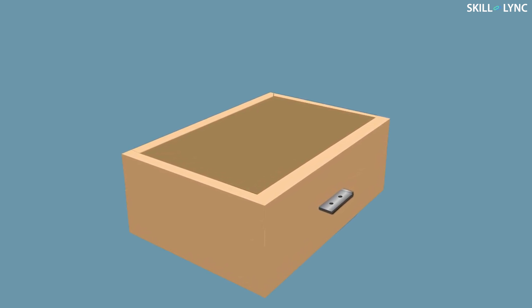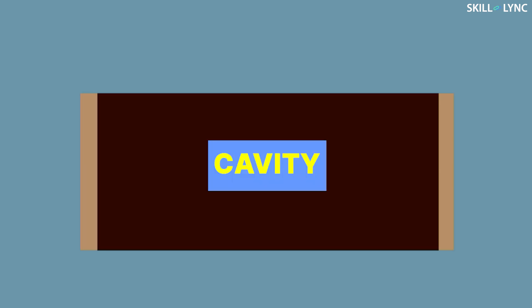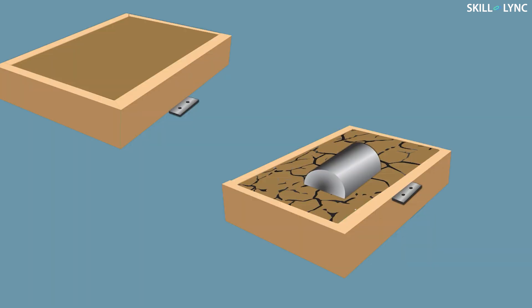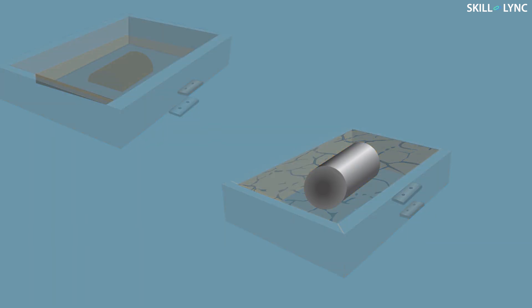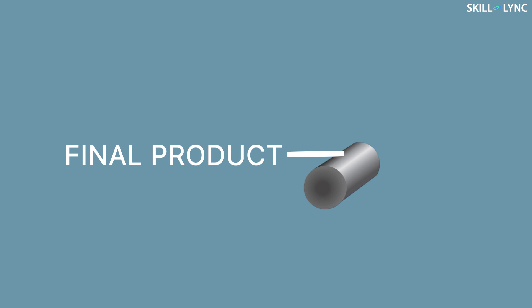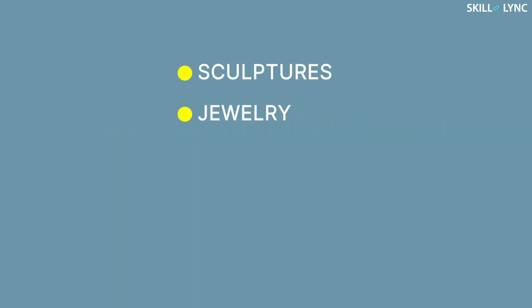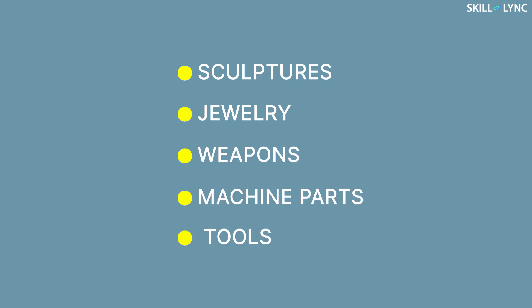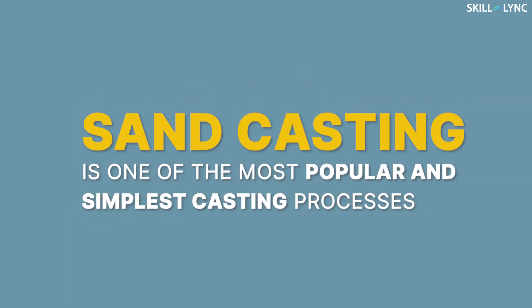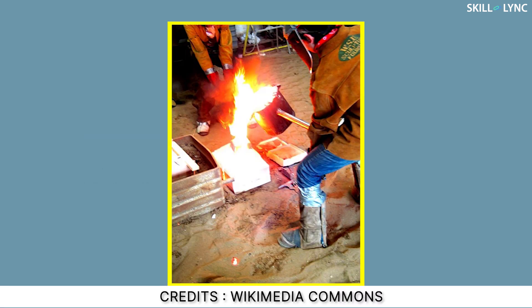This mold has a cavity of the desired shape. As the molten metal cools down, it solidifies and takes the shape of the cavity. This process is used for the fabrication of sculptures, jewelry, weapons, machine parts, tools, etc.